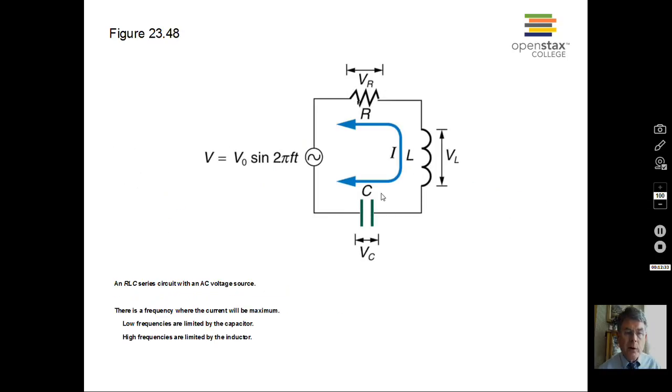We can also hook capacitor, inductor, and resistor in series. The inductor tends to block current when the frequency is high. The capacitor tends to block current when the frequency is low. Remember there's an insulator in between the plates. If the charge builds up too much, if the frequency is low, the capacitor will limit the current. There is a sort of sweet spot frequency at which the current will be a maximum through here.